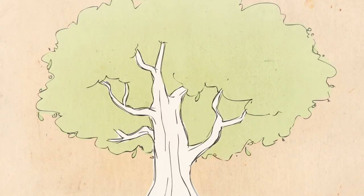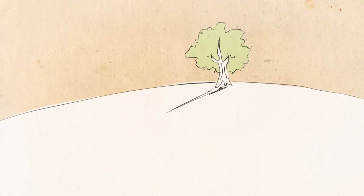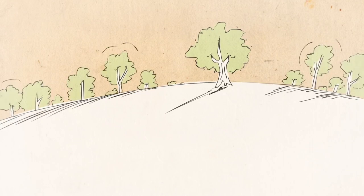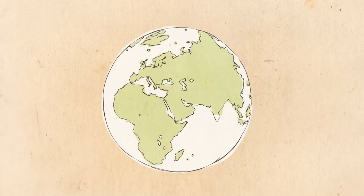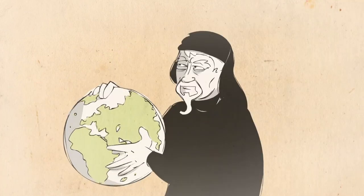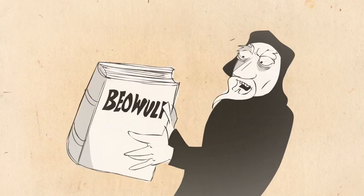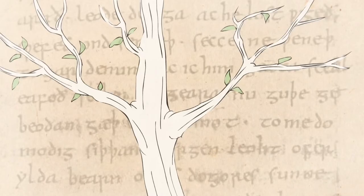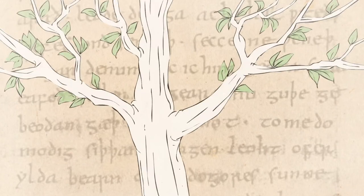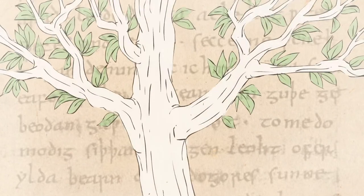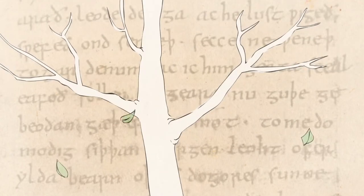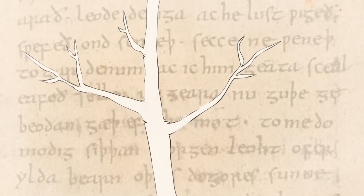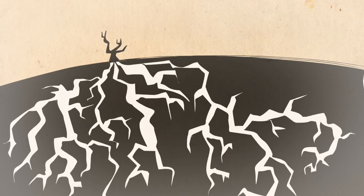When we talk about English, we often think of it as a single language. But what do the dialects spoken in dozens of countries around the world have in common with each other, or with the writings of Chaucer? And how are any of them related to the strange words in Beowulf? The answer is that, like most languages, English has evolved through generations of speakers, undergoing major changes over time. By undoing these changes, we can trace the language from the present day back to its ancient roots.